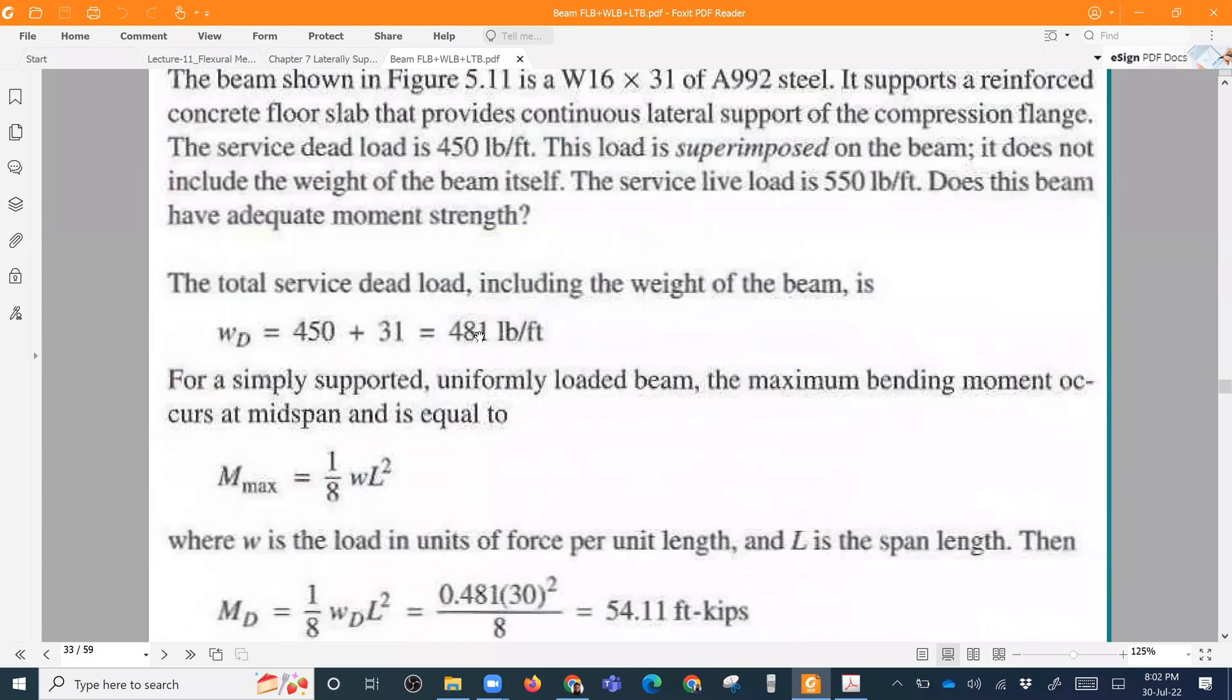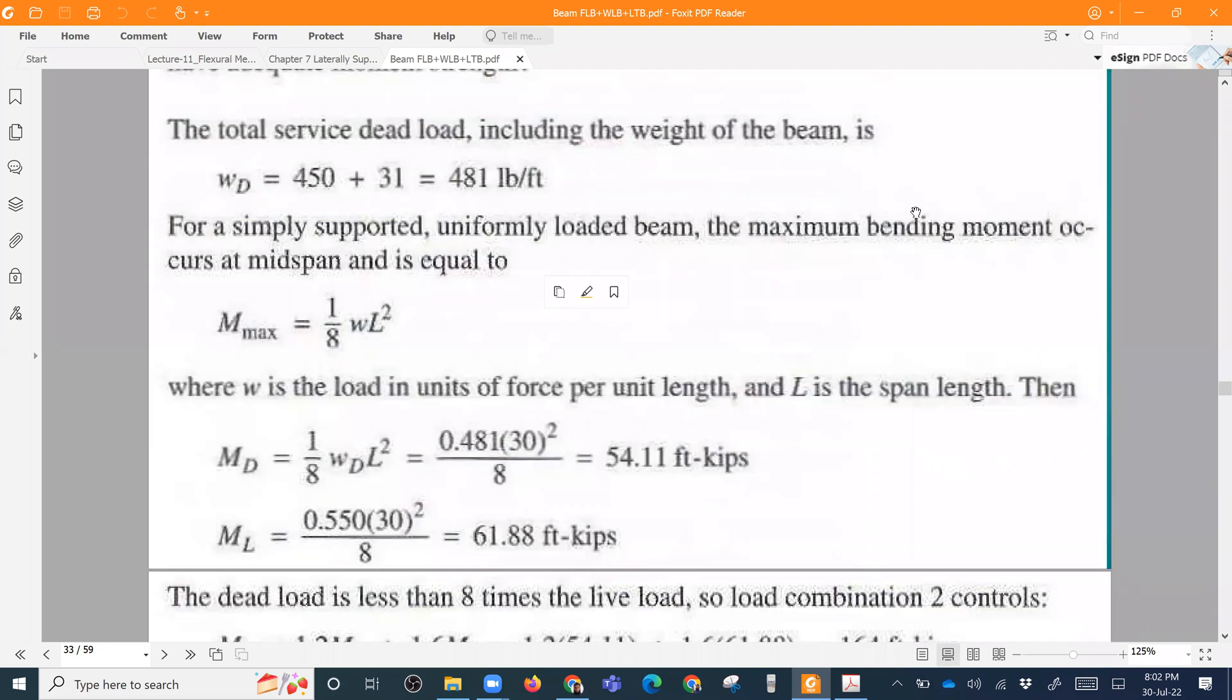So the total dead load is 450 plus 31, so this is 481 pound per feet is my dead load. And live load is 550.